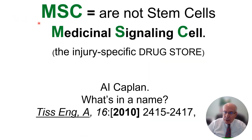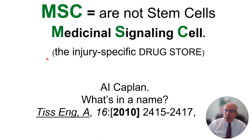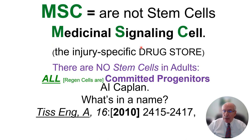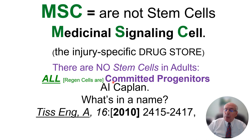MSCs are not stem cells. I kept the MSC nomenclature because of my delicate ego, and I now call them medicinal signaling cells because they're drug stores — they make gigantic amounts of cytokines and growth factors at sites of injury or inflammation. There are no stem cells in adults. All regeneration in individual tissues comes from committed progenitors.